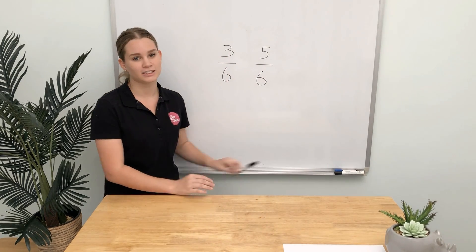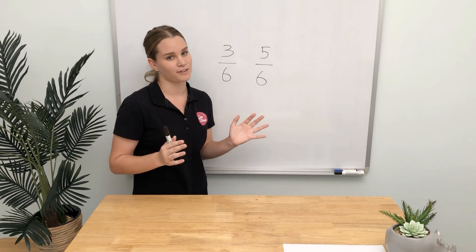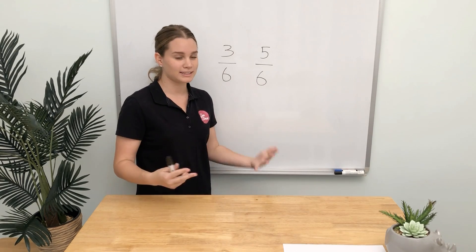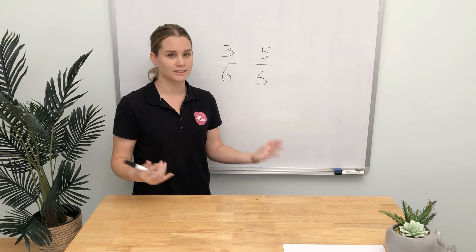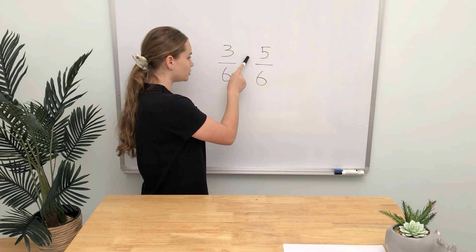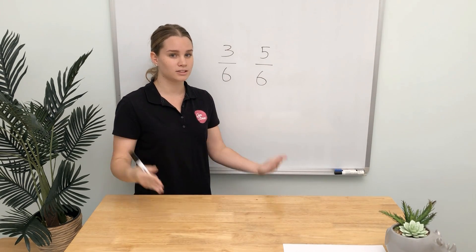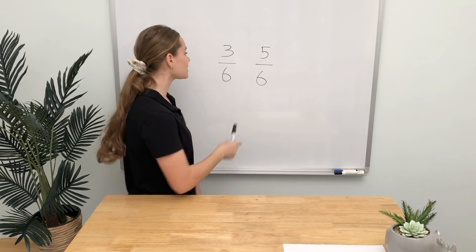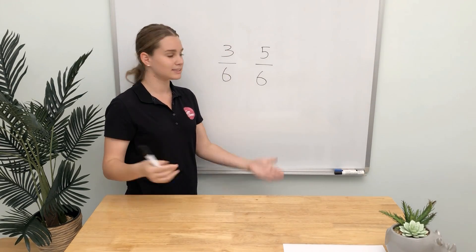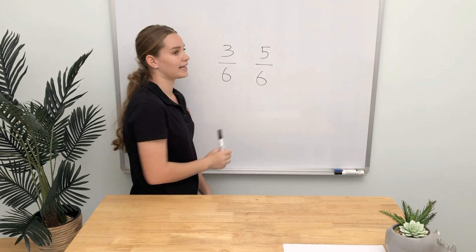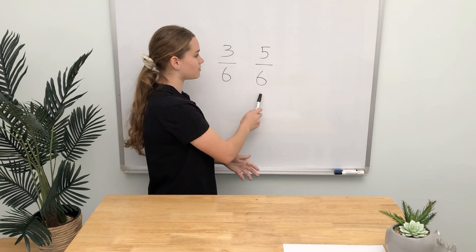Let's have a look at the two fractions behind me. What can you tell just by looking at these two fractions? We can tell that they have the same denominator — they both have six — but they don't have the same numerators, so we have to use numerators to compare them. This fraction has 3/6, and this fraction has 5/6, so this fraction must be greater.